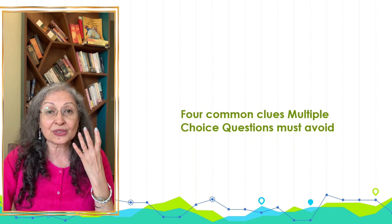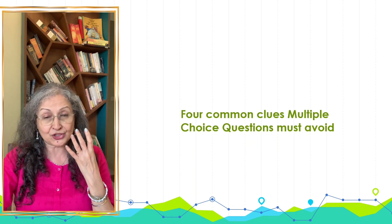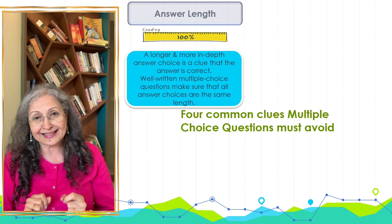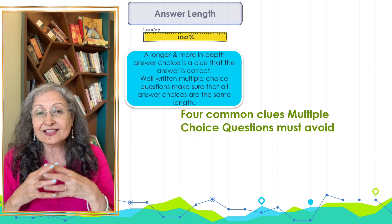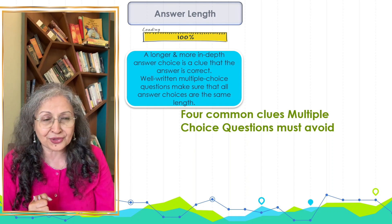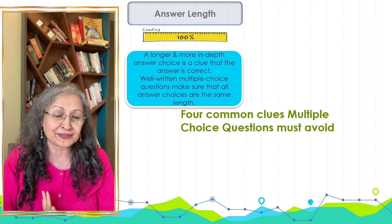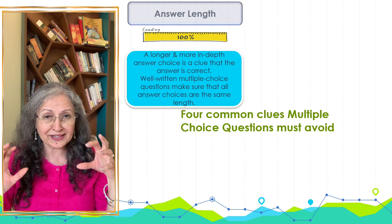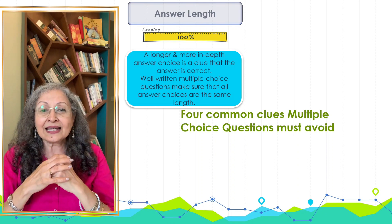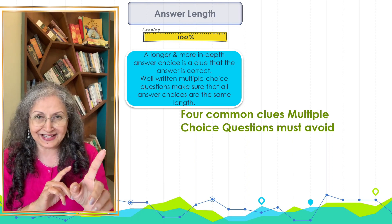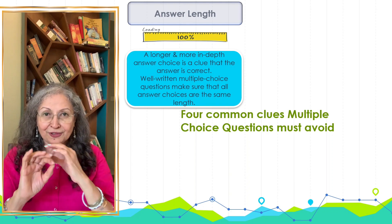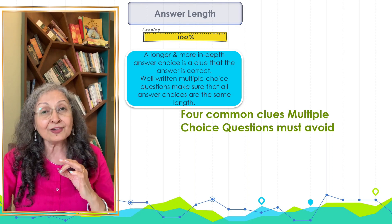I'd like to draw your attention to four common clues we need to keep in mind when framing multiple choice questions. The first one is the length of the answer. Based on research papers on MCQs, if there is a longer answer — one with more words among the four options — students might feel that this is the right answer and tend to click on it. So we must make sure that all four options are of the same length.